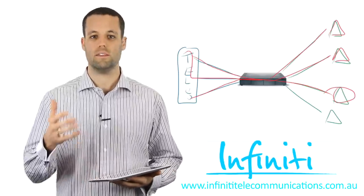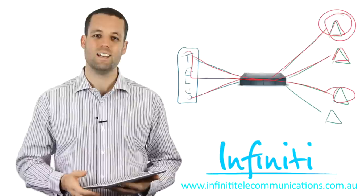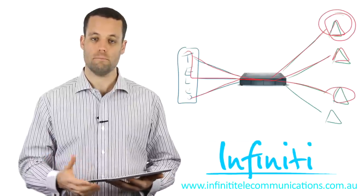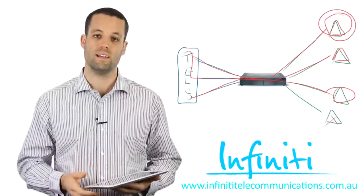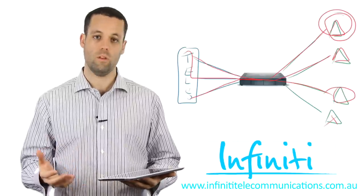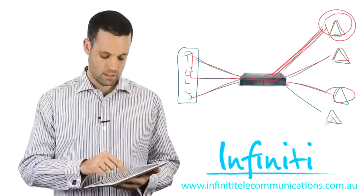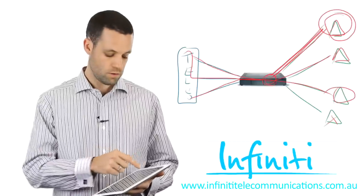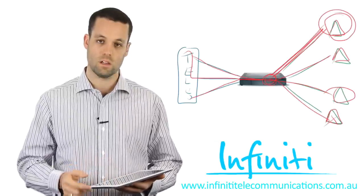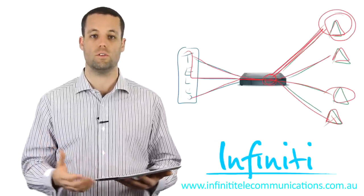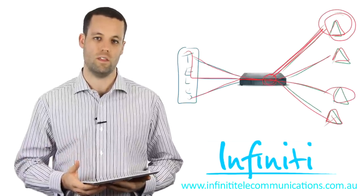What about transferring calls? Once a call has come in to, let's say, the main receptionist who's answered the call on line one and they want to transfer it through to a salesperson — all they need to do is put the person on hold. That transfers the call back and it sits inside the phone system. The person is still on line one, the line is still in use, but the system transfers the call out to the salesperson who can answer and have that conversation. That frees up the receptionist to answer any other calls.